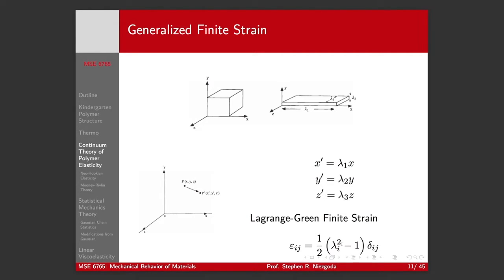So the u, right, our u tensor, our right stretch tensor, is basically what's being encoded by these stretch ratios.